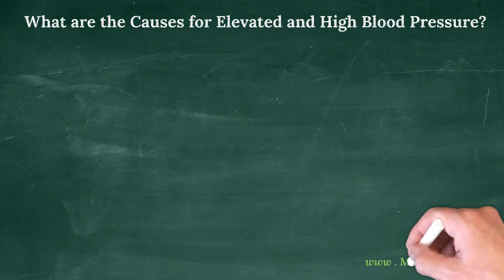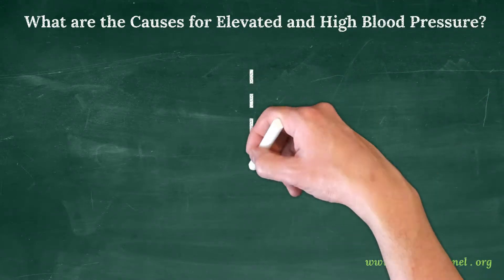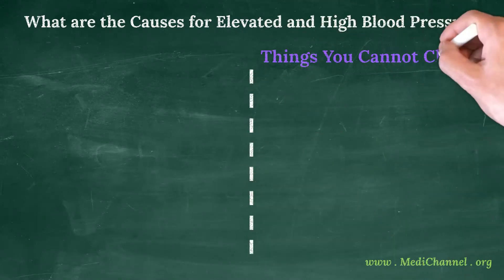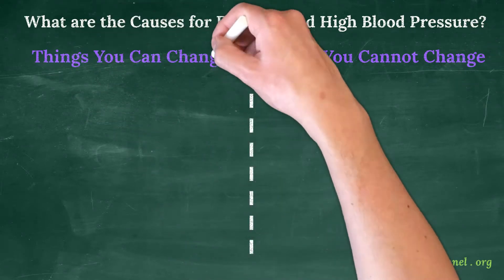From old age to genetics, from smoking to lack of exercise, the causes for the blood pressure at stage 2 remain the same as the previous two stages.